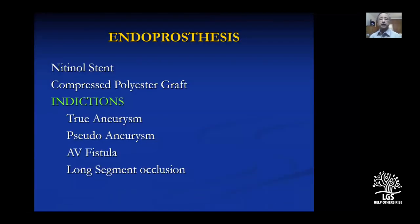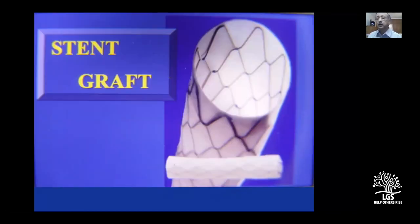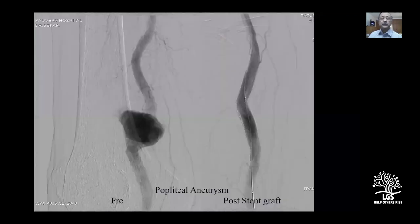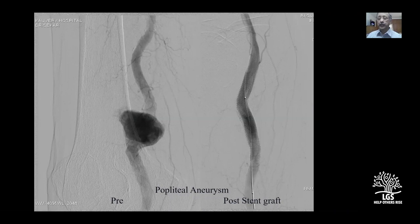Endovascular stent grafts are a recent advance: a compressed polyester graft is placed around a nitinol stent, used for aneurysms, pseudo-aneurysms, AV fistulas, and long-segment occlusions. This is compressed into a small delivery system and delivered across the stenosis. For example, an 86-year-old patient with a popliteal aneurysm and multiple comorbidities unsuitable for open surgery had the aneurysm covered with a stent graft, avoiding major surgery.